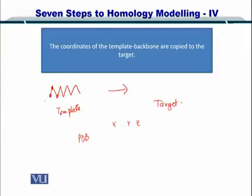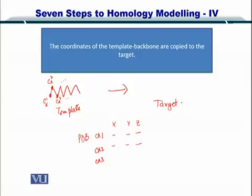So let's call this carbon alpha 1, carbon alpha 2, carbon alpha 3 and so on. For alpha carbon 1, you have X, Y and Z. Next, you have carbon alpha 2 with its coordinates. This information is there in your PDB and you can have all the alpha carbons that are here in the template's backbone.